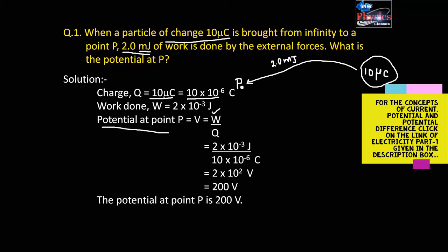Using the formula for potential, V equals work done per unit charge. Work done is 2 into 10 to the power minus 3 joule, and charge is 10 into 10 to the power minus 6 coulomb. We calculate this and get 2 into 10 to the power minus 2 volt, which equals 200 volt. So the potential at point P is 200 volt. This is the answer.